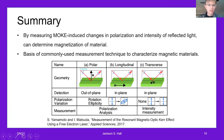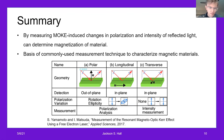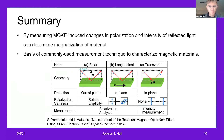In summary, by measuring the MOKE-induced changes in polarization and intensity of the reflected light, we can determine the magnetization of the material. This forms the basis of a commonly used measurement technique to characterize magnetic materials and image the magnetic domains. This table provides a summary of the three cases. For the polar and longitudinal cases, linearly incident light is reflected into elliptically polarized light with the major axis rotated. For the transverse case, there's no change in polarization but rather a change in intensity. Measuring the rotation or intensity change can be used to determine the magnetization of the material.